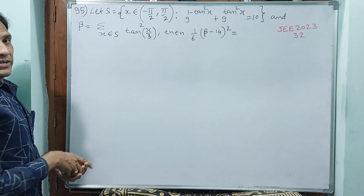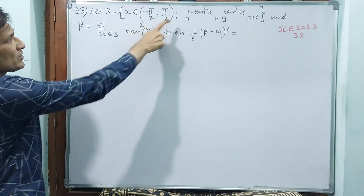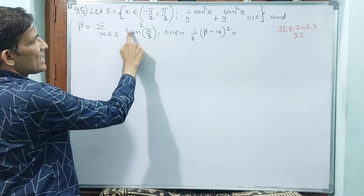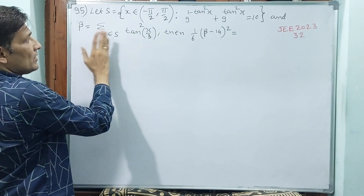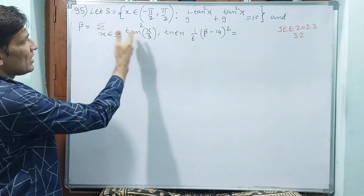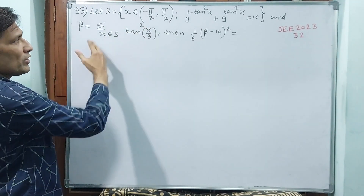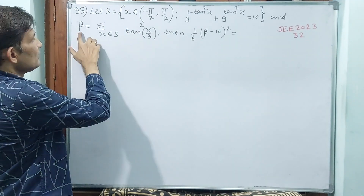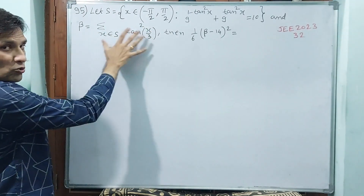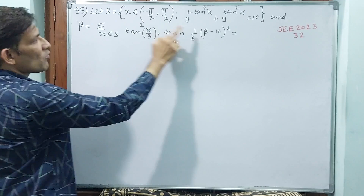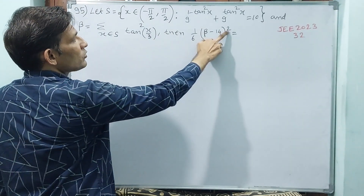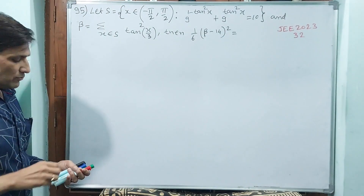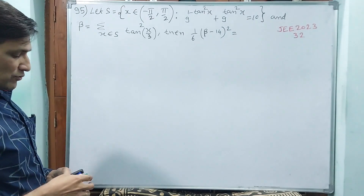Beta value: how to find it? You have to do a summation where these x values are substituted in x by 3 tan squared. If 1 value is there, r is 2 — 3 values in it — you keep 2, 3 values and add sigma. The total summation value is beta. Then you substitute beta into: beta minus 14, whole square, divided by 6. That value should come out to 32. Let us see how it is going to work out.